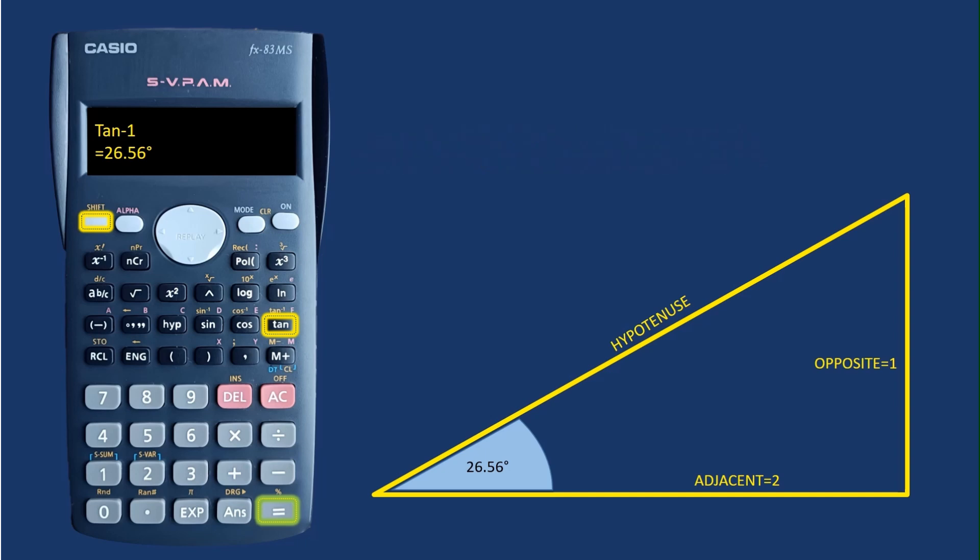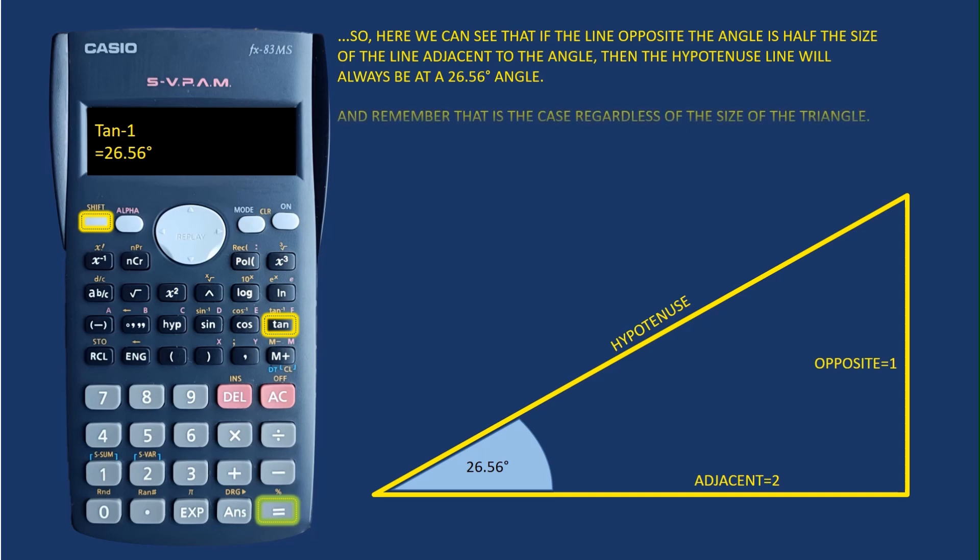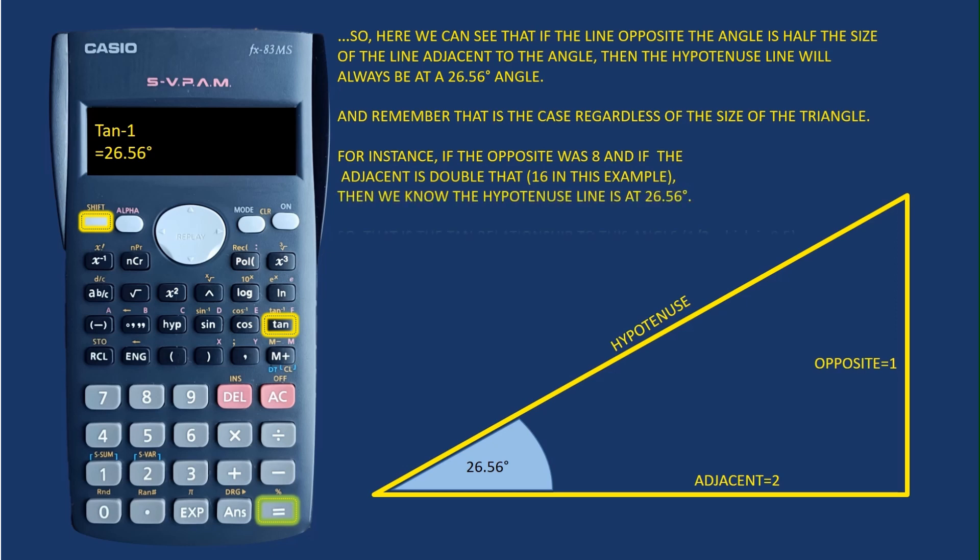That's basically how it works out. Here you can see that the line opposite the angle is half the size of the line adjacent to the angle. In that case, the angle will always be 26.56 degrees if that's the relationship between the two sides.